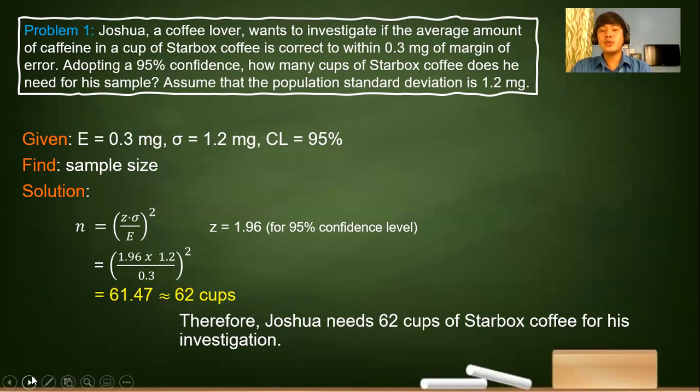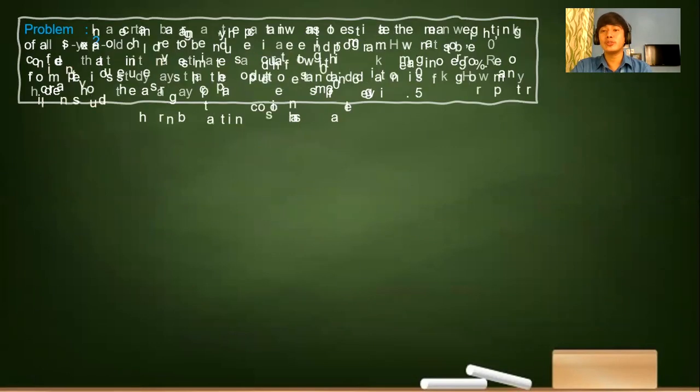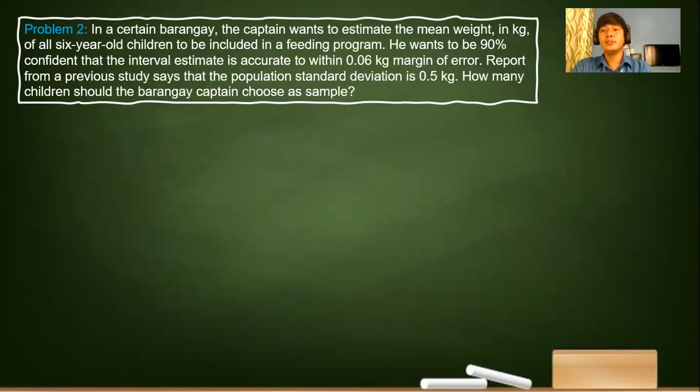Therefore, Joshua needs 62 cups of Starbucks coffee for his investigation. Joshua will not worry anymore to guarantee the central limit theorem because for as long as he will obtain 62 cups, then his investigation will have a confidence level of 95% already. It means that Joshua could assume that his study is accurate at 95% confidence level.